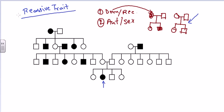That is our first important observation. Now let's determine whether it is autosomal recessive or sex-linked recessive. We need to look for any sex bias. There is no sex bias here — the trait is distributed in males and females almost equally, suggesting it is not sex-linked and is mostly autosomal. But we cannot be sure until we use genotypic analysis.